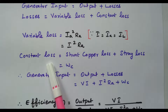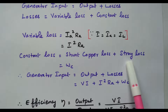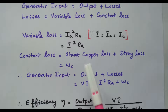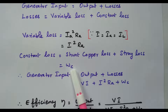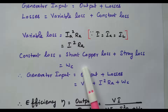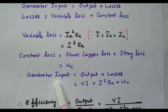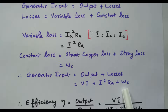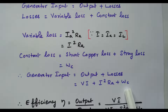The constant loss includes shunt copper loss and stray losses. These do not change with respect to the current, so we denote them as WC. It is always constant and irrespective of the current. So the generator input equals output plus losses: input = VI + I²RA + WC.